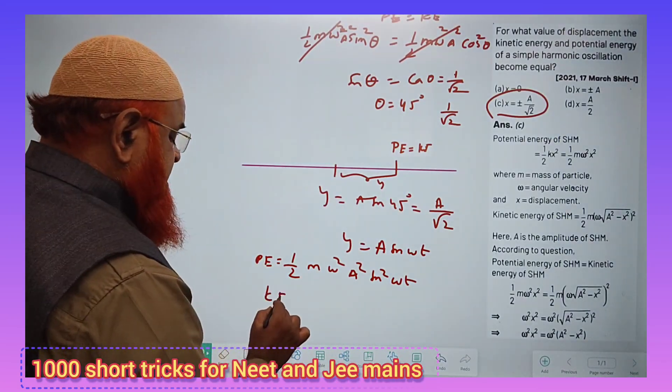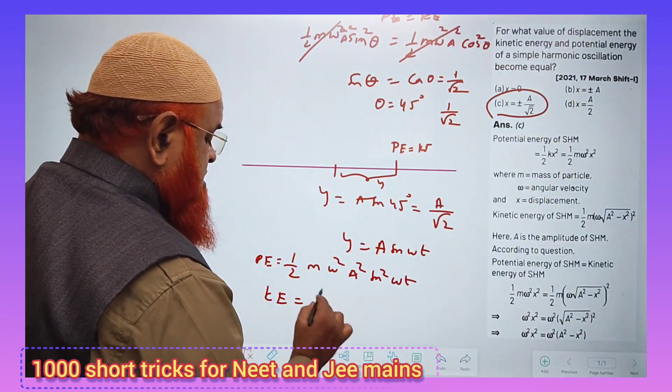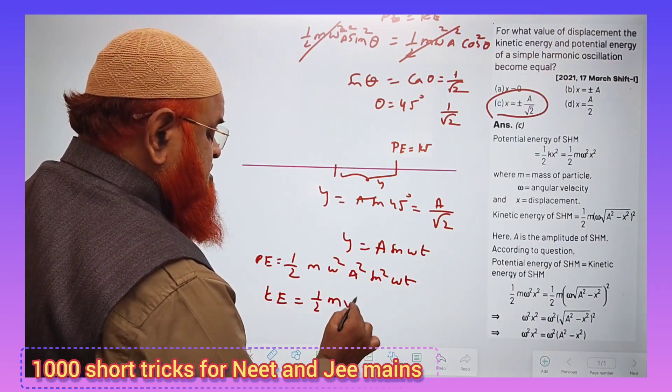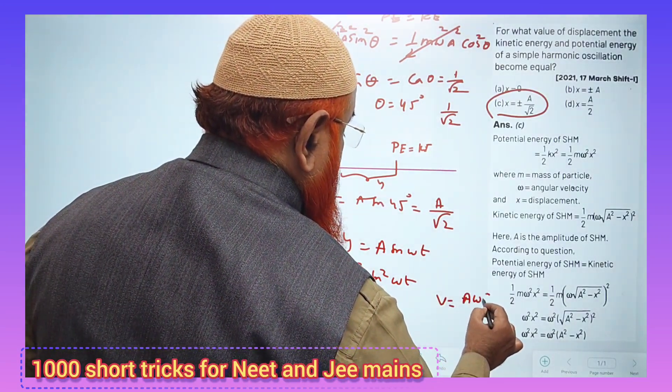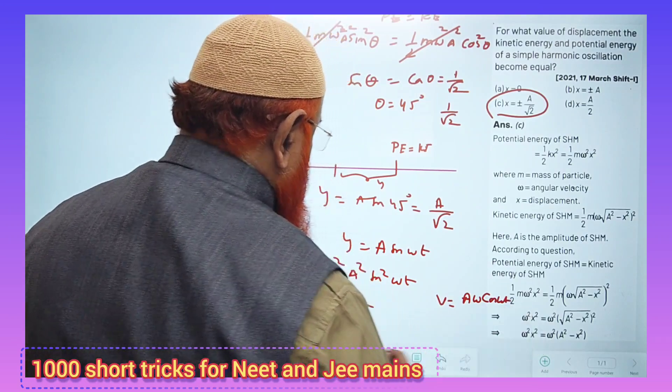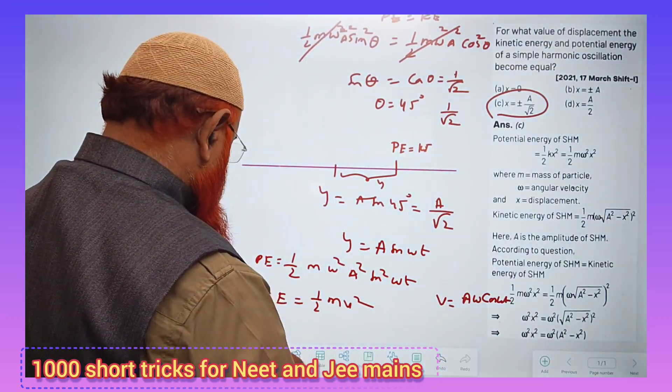Then what is the formula for kinetic energy? Kinetic energy formula is nothing but half m v square. And you know what is the formula for v? v is nothing but a omega cos omega t. If you substitute instead of v square, this part, then what are you going to get?